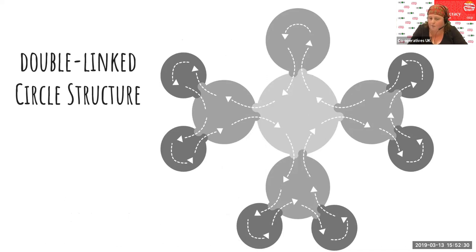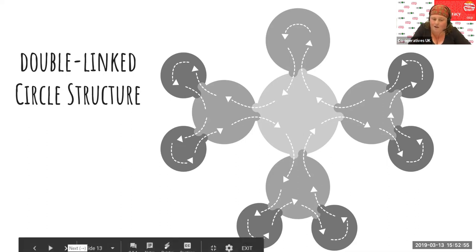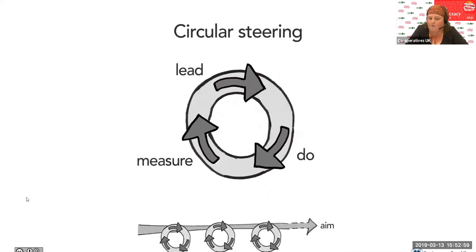This is a double-linked circle structure showing how information flows between all the different circles. These can be quite simple for some organizations and really complex for much bigger ones. I've been learning just how many different companies, schools, co-housing groups, cooperatives, and all sorts of people are using sociocracy around the world. Sometimes you've got three or four linked circles, and sometimes it keeps dividing exponentially with many people connected. Referring to this as circular steering: lead, do, measure. You plan what you'd like to do, agree that in your circle, do it, gather feedback, measure what happened, and keep doing that.